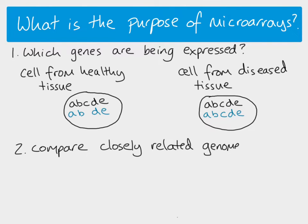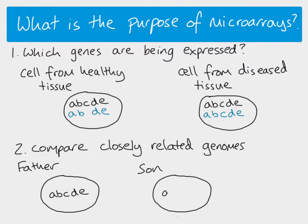The second use is comparing genomes. If you have two closely related individuals, you could compare their genomes. For example, a father and a son — if the son is not showing gene C, it might mean there's a mutation, a section of DNA that is missing, or an extra bit of DNA that has been inserted. We can compare the DNA from cells of two closely related individuals.